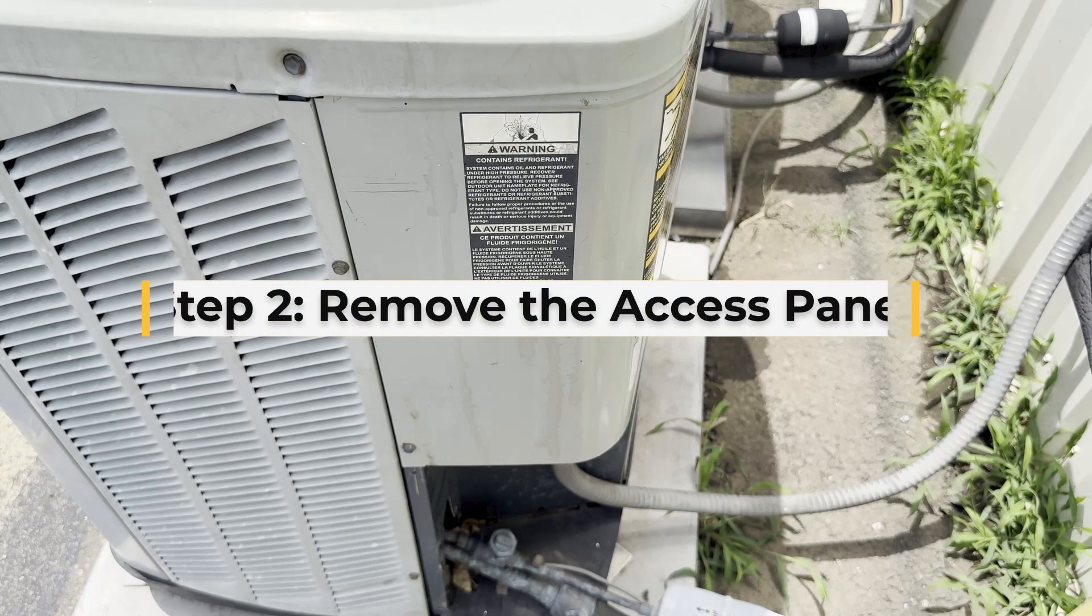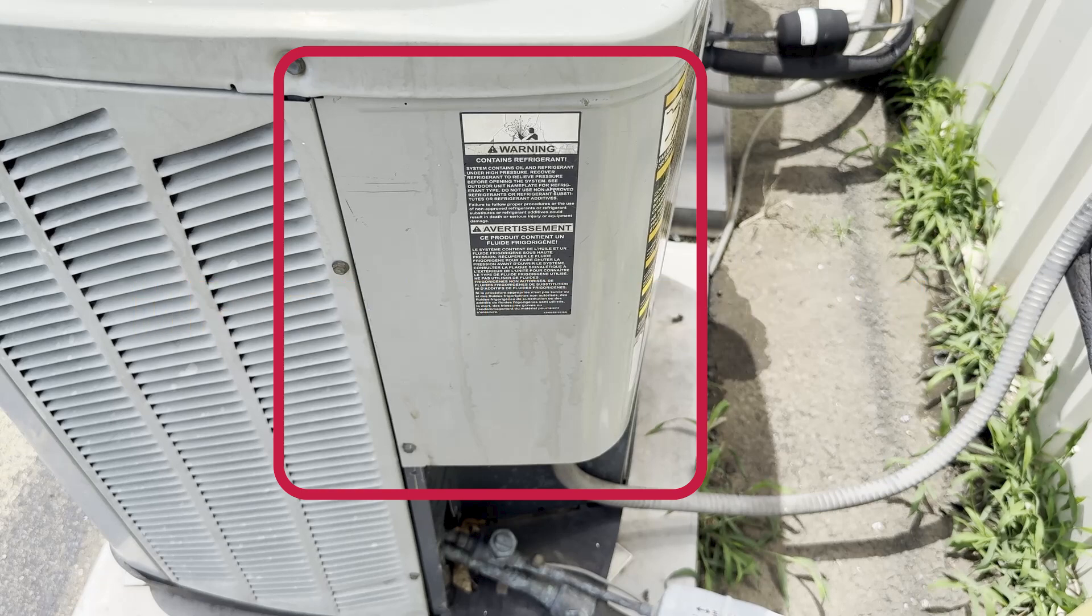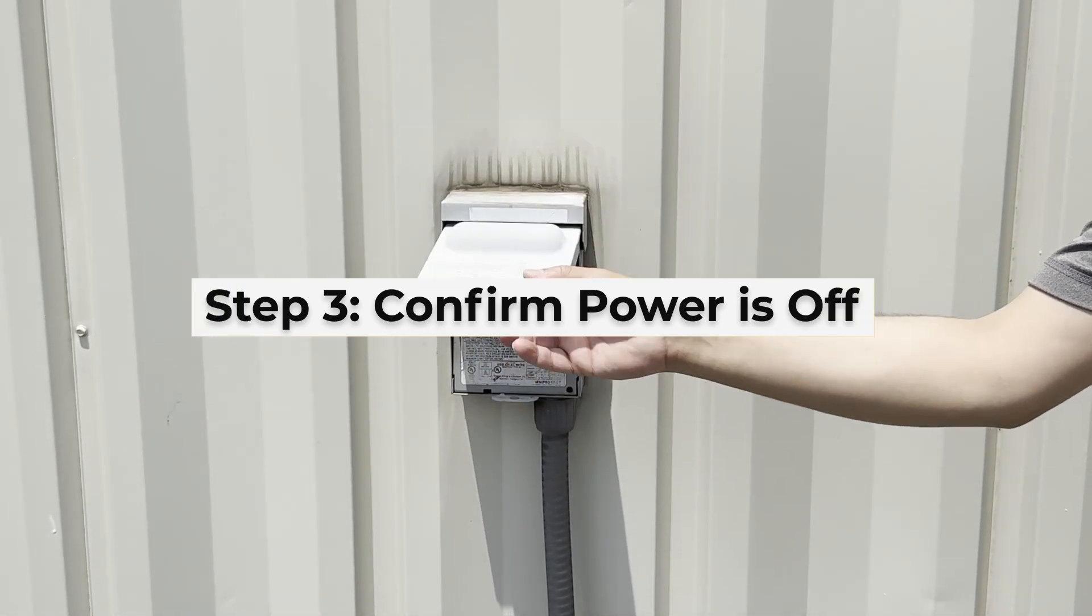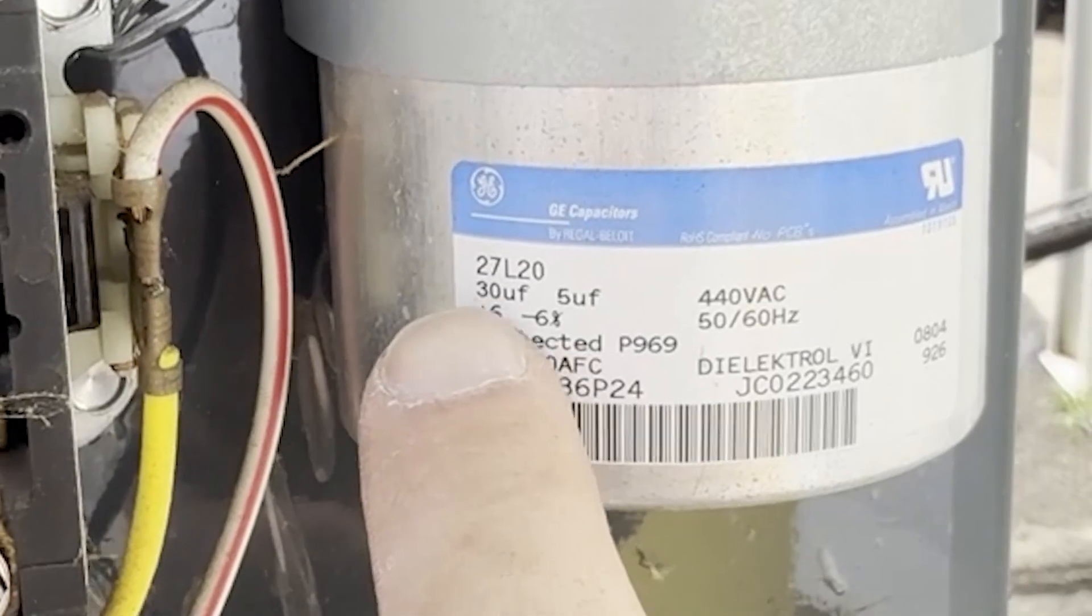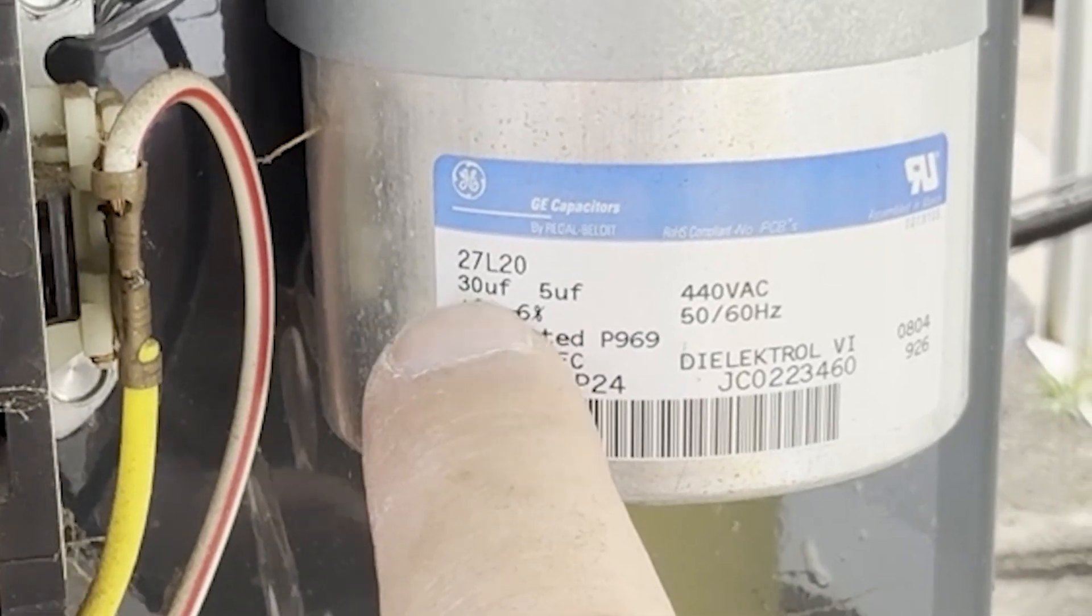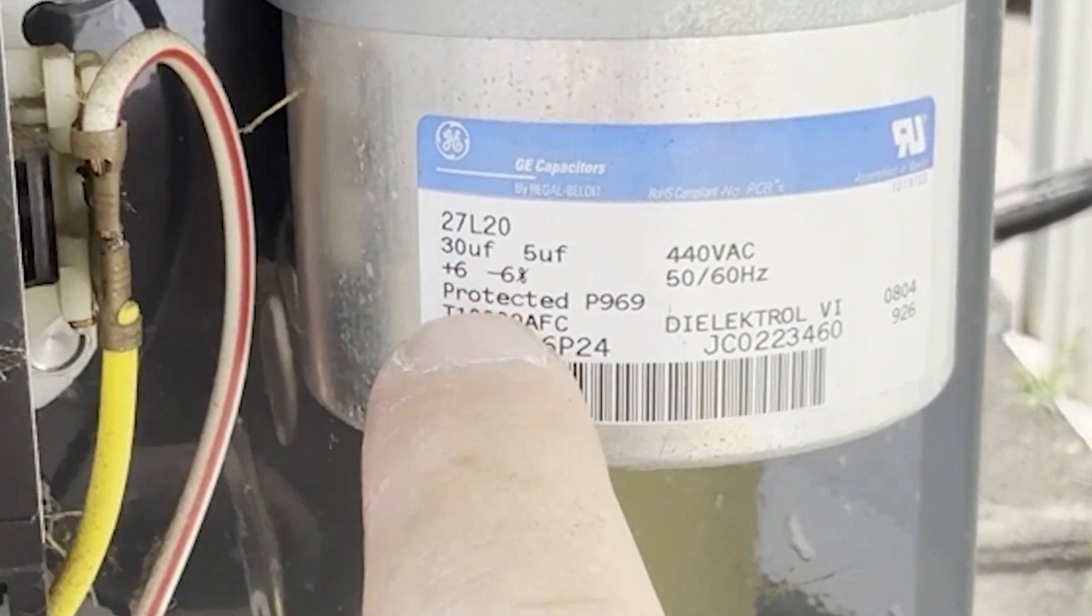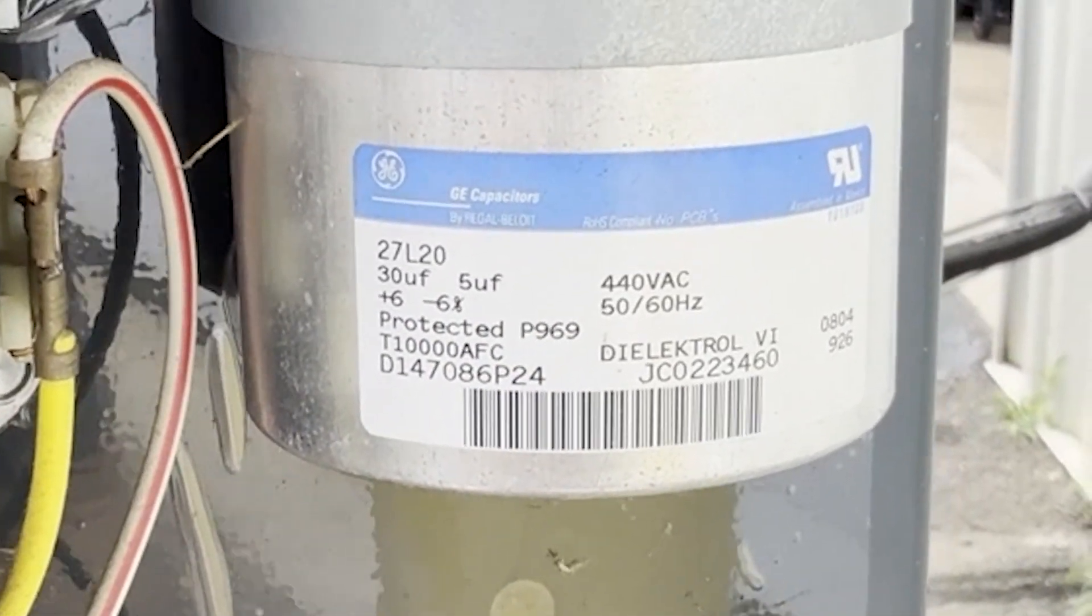Step 2: Remove the access panel. Use a 5-16ths nut driver or a regular screwdriver to remove the screws holding the side panel. Step 3: Confirm the power is off. Even though we pulled the disconnect, double check with the multimeter. Now, check the label on your capacitor. Ours reads 30x5 microfarads plus or minus 6%, 440 volts. We'll need this info later when replacing it.